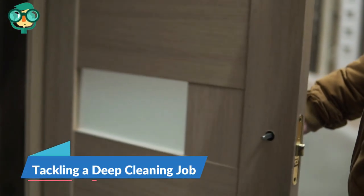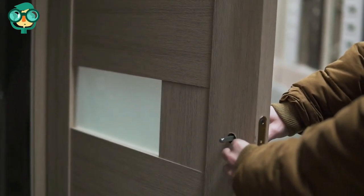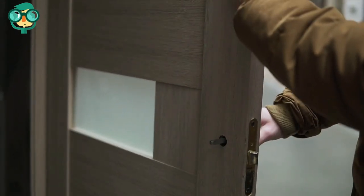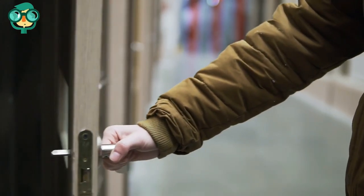The second method is tackling a deep cleaning job. Take apart the lock. Remove the screws holding the lock to the door. Unscrew the two screws underneath the doorknob, as well as the screws holding the faceplate to the side of the door.